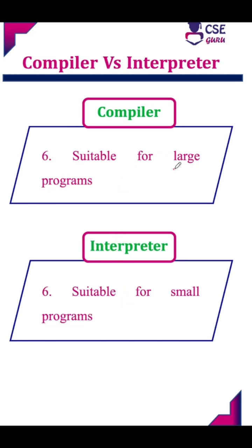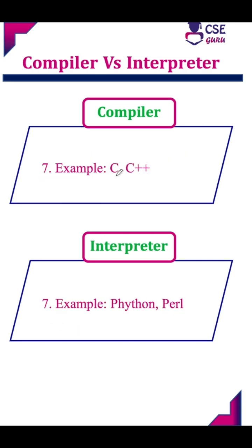Compilers are suitable for large programs, while interpreters are suitable for small programs. Examples of compiler languages are C and C++. An example of an interpreter language is Python and Perl.